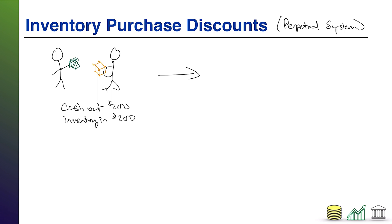If we look at our balance sheet, we're going to show investors that we have inventory worth $200. Having assets is a good thing — it tells investors we have something that will bring future value to our business. So we like having that asset of inventory on our balance sheet, but what we like even more is selling that inventory.